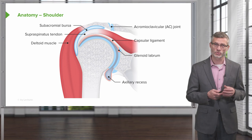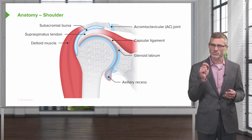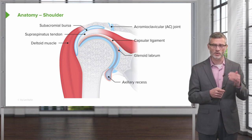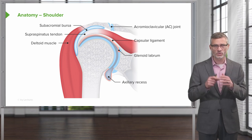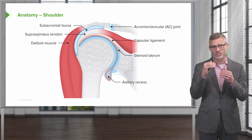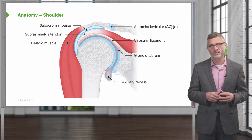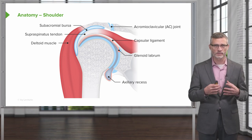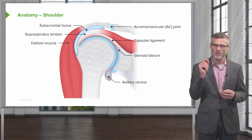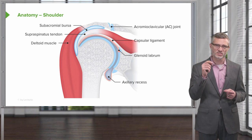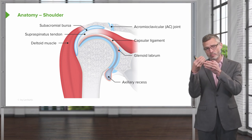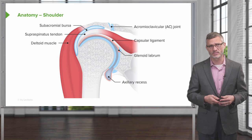Lastly, note the subacromial bursa at the top. This is one of the only parts of the body where a muscle passes between two bones — in this case the acromion part of the scapula and the humeral head. There's some buffering there, and the supraspinatus lies right underneath the subacromial bursa, which provides cushioning as the rotator cuff moves. The subacromial bursa is contiguous with the subdeltoid bursa — they are the same structure, named differently based on whether you're proximal underneath the acromion or more distal underneath the deltoid muscle.